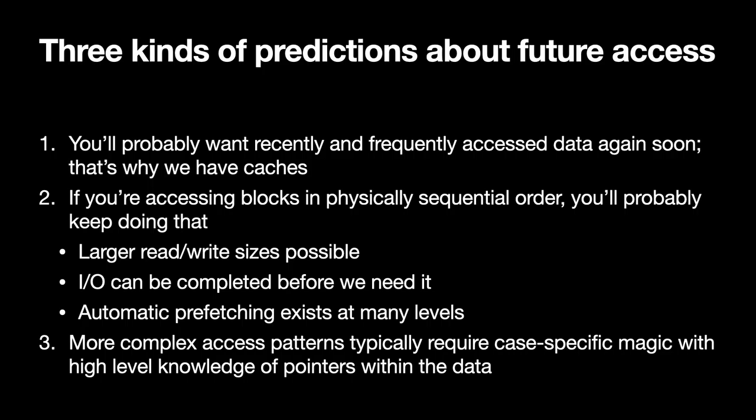Because sequential access predictions are not data dependent, they can be done by lower levels of the storage stack. Those kinds of predictions enable much larger read sizes, which get all kinds of efficiencies from lower levels. The third category is data-dependent complex access patterns that require specialized logic that understands what's going on in the data. For example, if you're doing a B-tree scan, in order to know which pages you might want next, you have to look at the data and understand what it means — so that can't be done by lower-level parts of the system automatically.